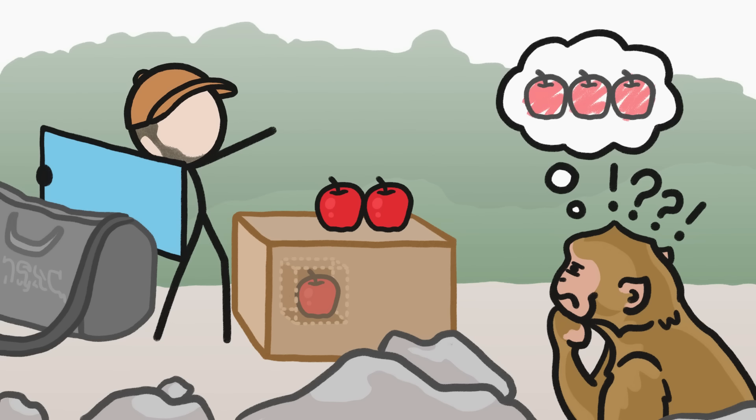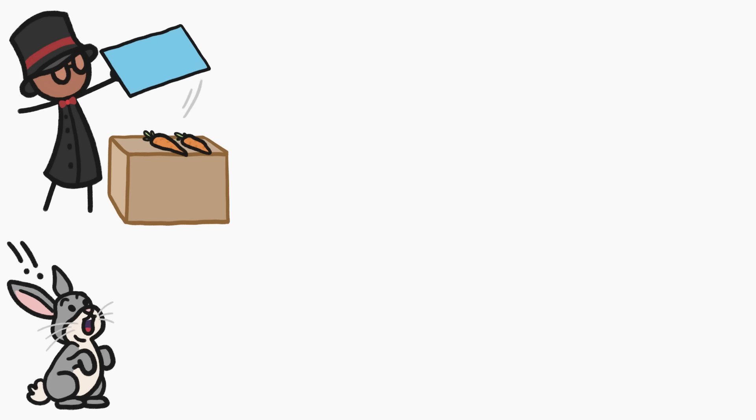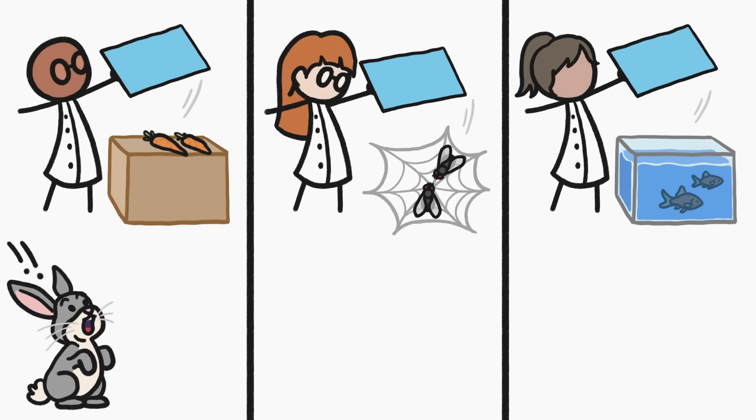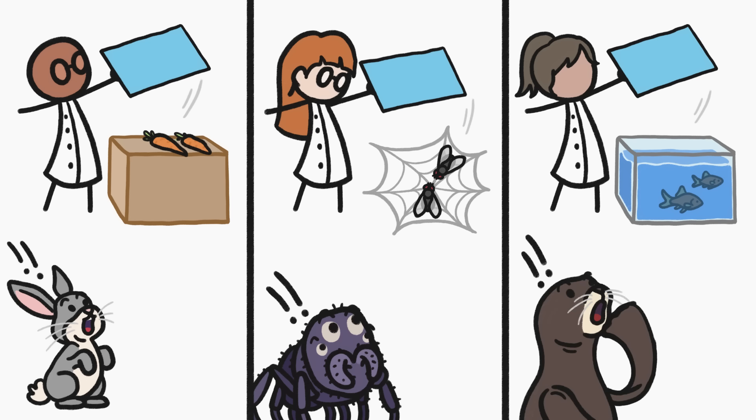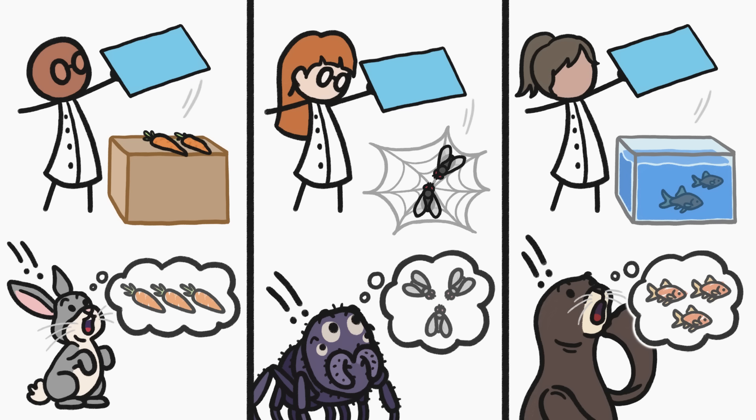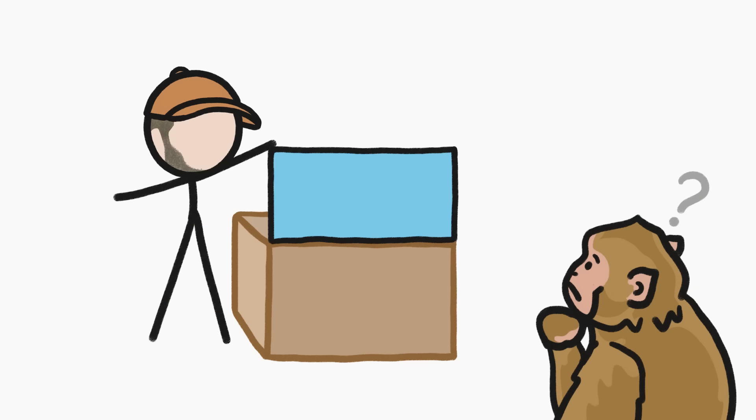And monkeys aren't alone. Over the past few decades, using similar sleight-of-hand experiments, magicians, I mean researchers, have found that pretty much every animal we can test, from spiders to sea lions, seems to get surprised when the number of items they expect to see doesn't match the number of items that are revealed. At least, that's what happens when the illusion is performed with numbers smaller than four.